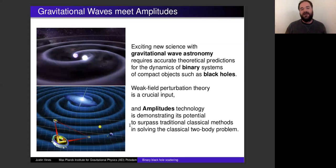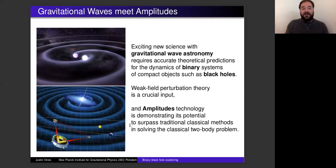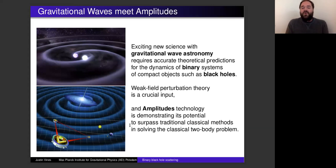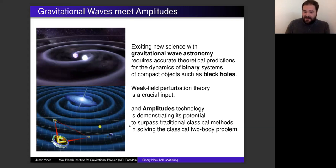This new science requires very accurate theoretical predictions for the dynamics of binary systems of compact objects such as black holes. Among the many approaches — for example, full numerical simulations of Einstein's equations for a binary black hole system — weak field perturbation theory is a crucial input for these theoretical predictions to cover the whole parameter space, and this is where amplitudes come in.